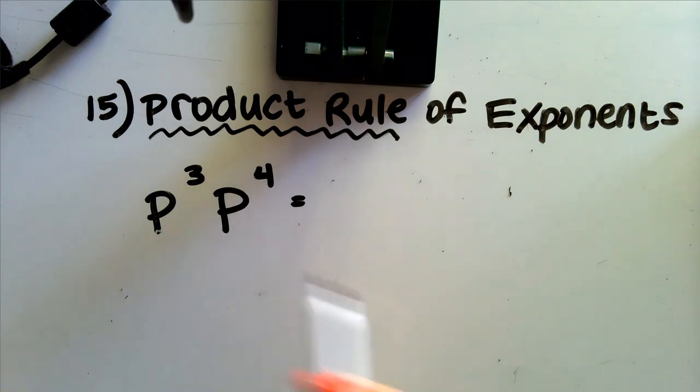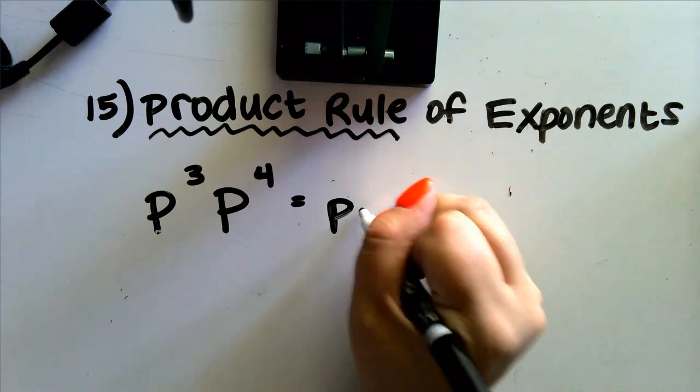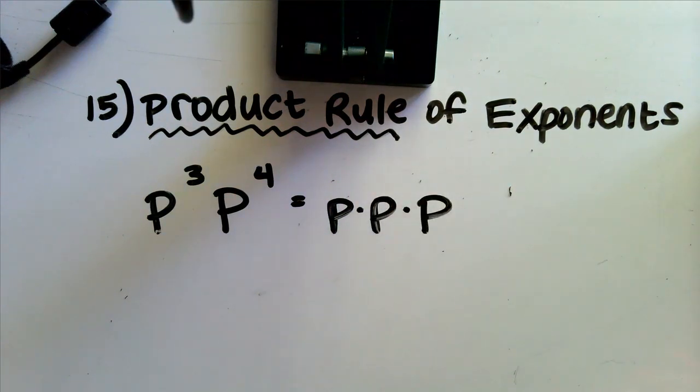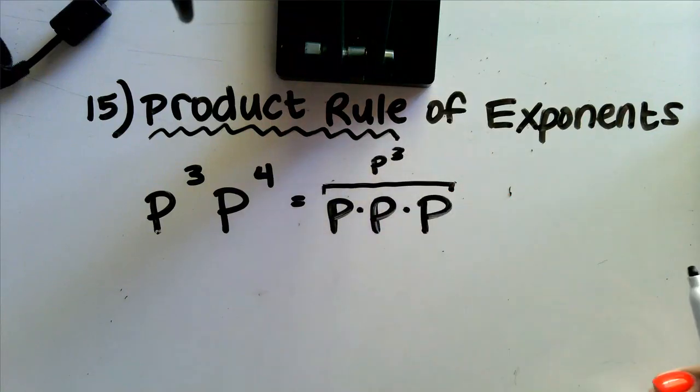So first thing, let's expand p to the third. We know that p to the third is p times p times p. This right here is equal to p to the third.